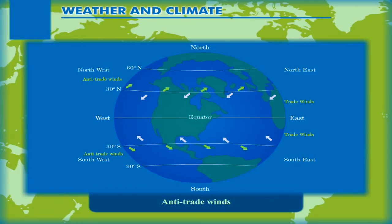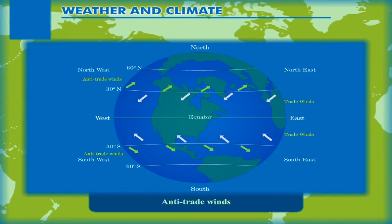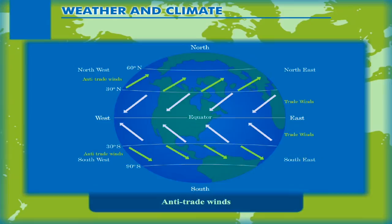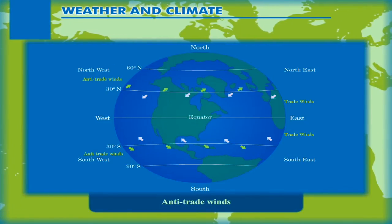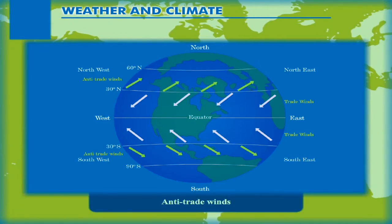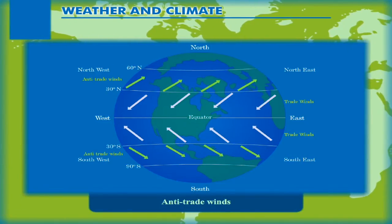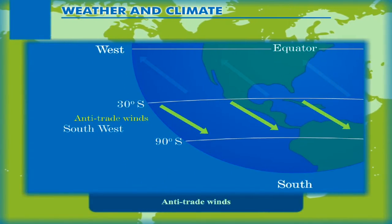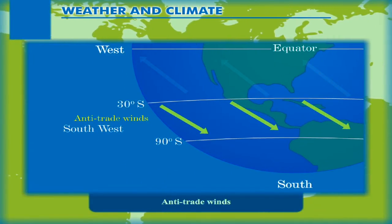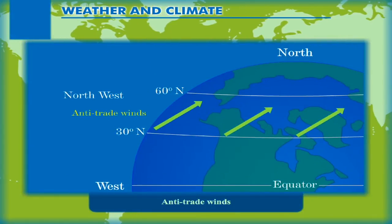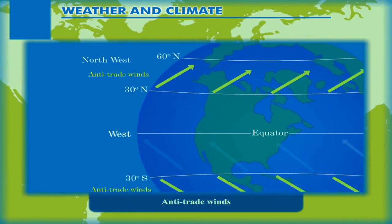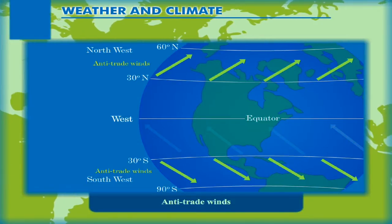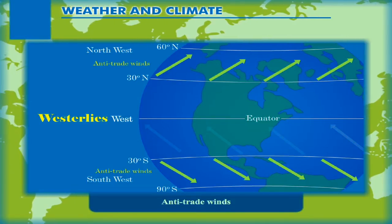Anti-trade winds tend to blow in the opposite direction of trade winds. They blow from the subtropical high pressure belt towards the subtropical low pressure belt. Their direction is south-west in the southern hemisphere and north-west in the northern hemisphere. West being the common direction, they are also called westerlies.